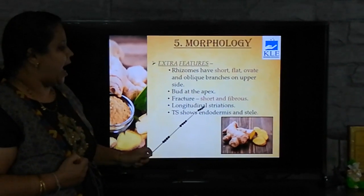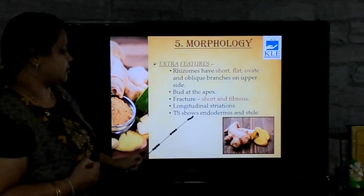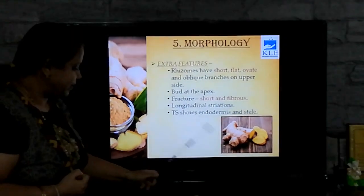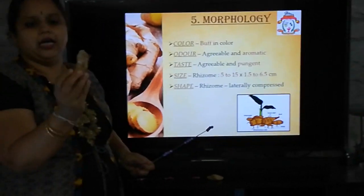Nodes and internodes can be seen, and when we study the transverse section, we can observe the endodermis and stele. Let me briefly recap the morphology. Colour: buff in colour, as you can see here. Odour: when you smell it, it is agreeable and aromatic. Taste: agreeable and pungent. Size: length is usually 5 to 15 centimetres — this specimen is somewhere around 7.5 centimetres — and the breadth is 1.5 to 6.5 centimetres, around 2 to 2.5 centimetres here.